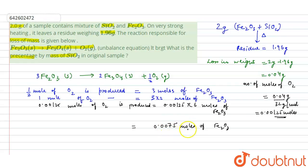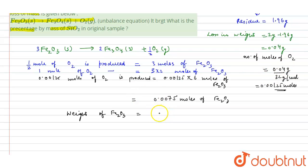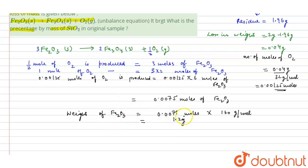Now we know these many moles of Fe2O3 are present in the sample. We can calculate its weight: since moles = weight / molecular weight, we multiply 0.0075 moles by the molecular weight of Fe2O3, which is 160 grams per mole. This gives 1.2 grams — meaning the amount of iron oxide present in the 2 gram sample is 1.2 grams.